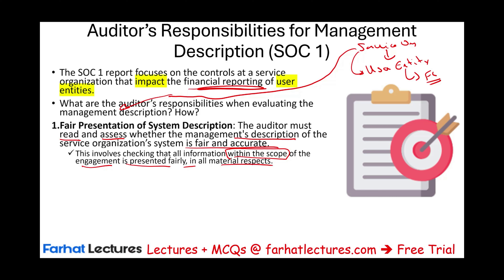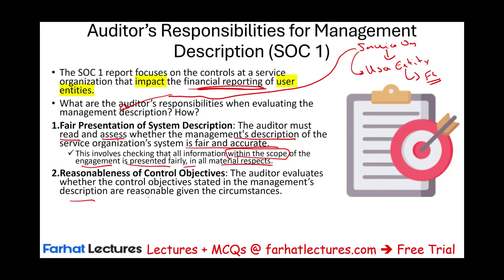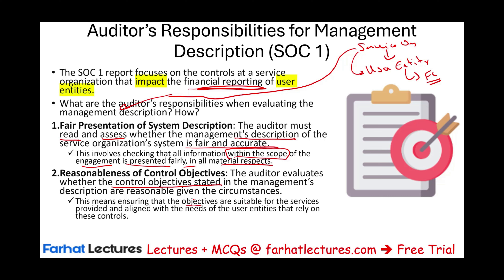The auditor also evaluates whether the control objectives stated in the management description are reasonable given the circumstances. For example, a payroll company might state that deductions and withholdings are properly computed. The auditor ensures that these objectives are suitable for the services provided and align with the needs of the user entity — such as ensuring employees' net pay and tax withholdings are computed properly.